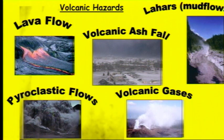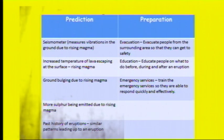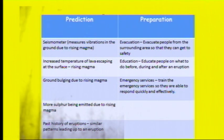Different volcanic hazards include lahars and mud flows, lava flows, volcanic ash fall, pyroclastic flow, and volcanic gases — you need to know what each of these are. For prediction, very similarly to earthquakes, we use a seismometer to measure vibrations due to rising magma, look at temperature increases in the lava at the surface, observe the ground bulging, and monitor increased sulfur emissions — all caused by magma rising within the volcano. We can also look at past eruption history for patterns. For preparation, we can evacuate people to safety, educate them on what to do before, during and after using emergency kits and evacuation plans, and train emergency services to respond quickly and effectively.